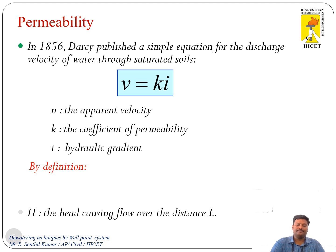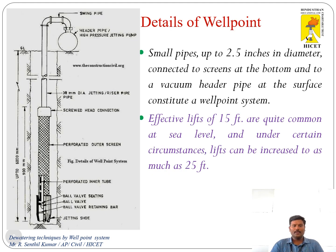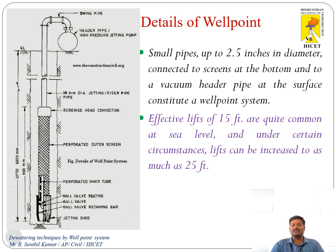The hydraulic gradient i can be denoted as H/L, where H is the head causing flow over the distance L. Regarding the details of a well point system: a small pipe up to 2.5 inches in diameter is connected to screens at the bottom and to a vacuum header pipe at the surface. All the well points are connected by the header pipe, and effective lifts of 15 feet are quite common at sea level. Under certain circumstances, lifts can be increased to as much as 25 feet.